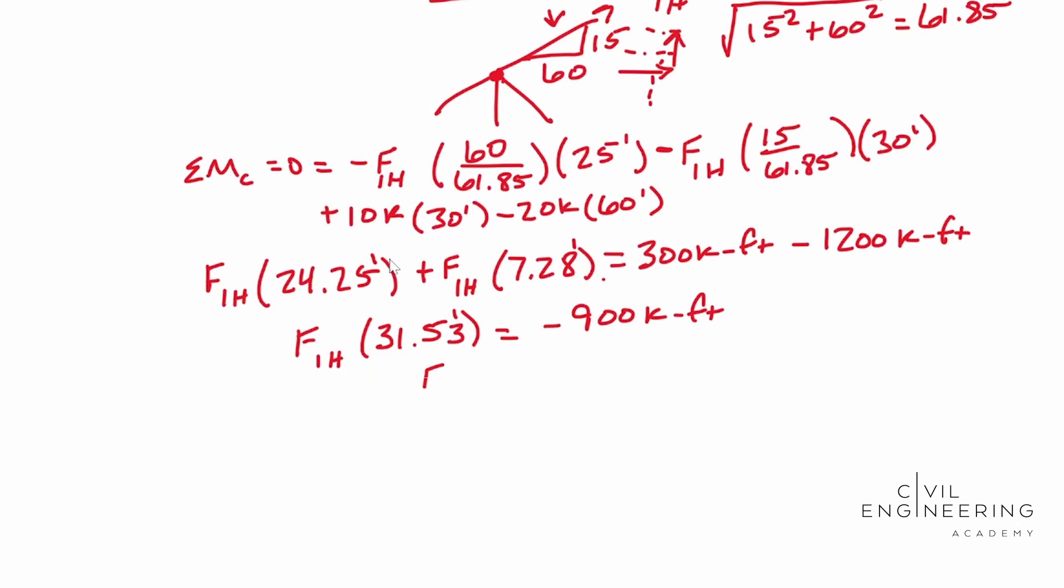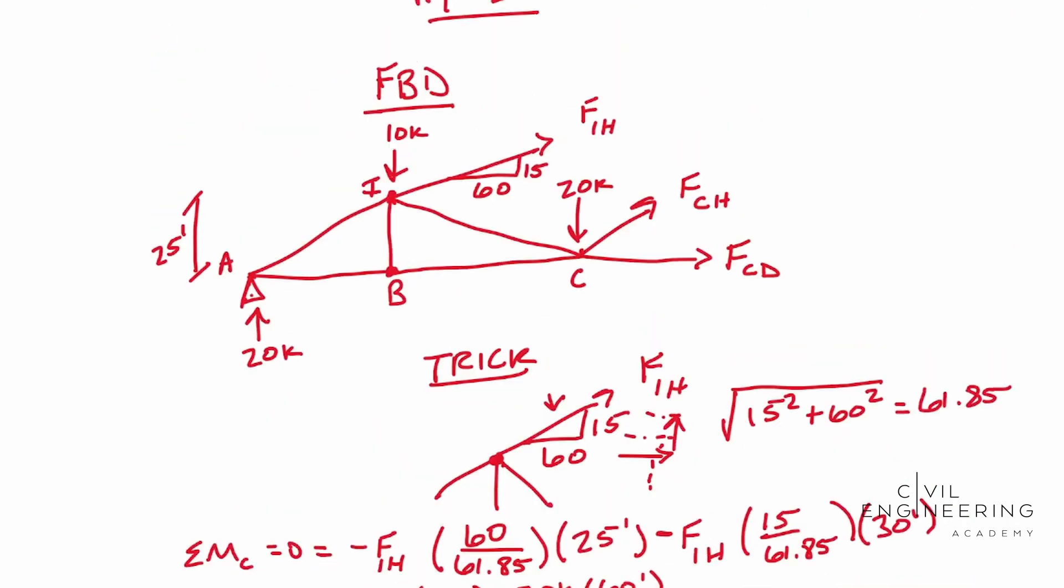And so if you're solving for FIH, that's going to be equal to 28.54 kips, because we divided by that foot and so that feet goes away, and now we're left with kips. So there's your answer. Let's go ahead and see which selection that is: 28.54.